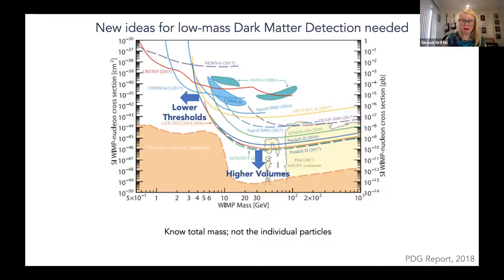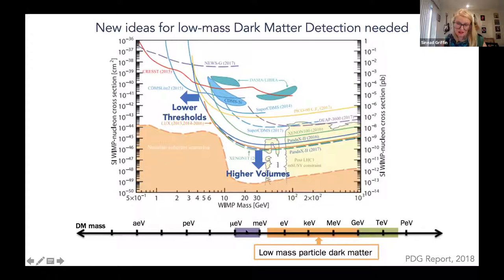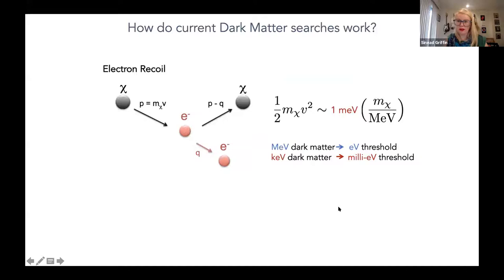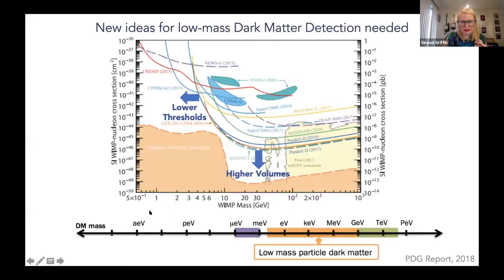Why are we doing this? The low-mass dark matter particle energy range — the micro-eV to milli-eV range, all the way to a GeV — is exactly the energy range of quantum materials. To explain how existing dark matter searches work, I have a schematic of how a nuclear recoil dark matter detector experiment works.